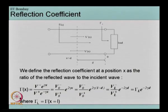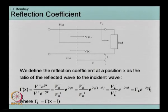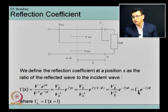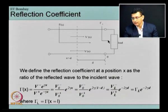Gamma(x), the reflection coefficient, is simply the ratio of the reflected wave to the incident wave. Gamma(x) is given by this formula, and on doing a coordinate transformation we can write gamma(x) in terms of gamma_L, which is the reflection coefficient at the load end. This gamma_L is the value of gamma at the load point.